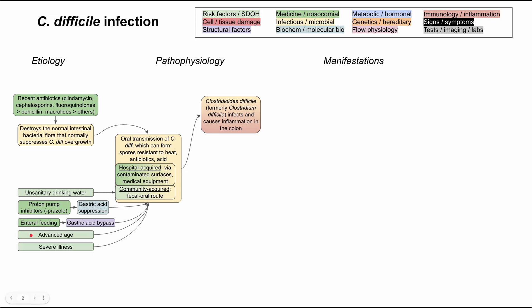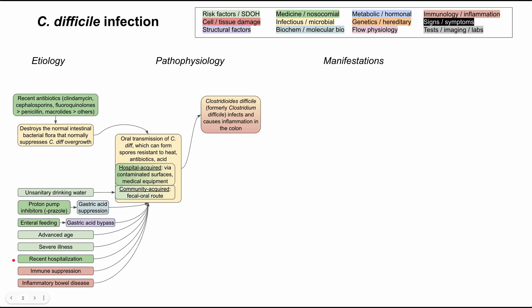Other risk factors: advanced age and severe illness predispose you to C. diff infections. Recent hospitalizations can also predispose you to C. diff, and note that's not mutually exclusive from recent antibiotics — a lot of times it's hospitalized patients who have been on antibiotics for a week or so that end up getting diarrhea and being diagnosed with C. diff. Lastly, immune suppression and inflammatory bowel disease also predispose you to C. diff infections.